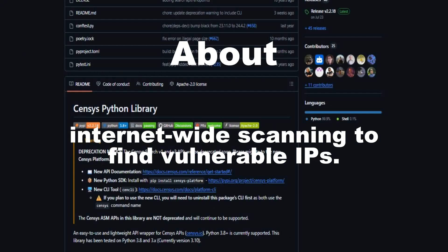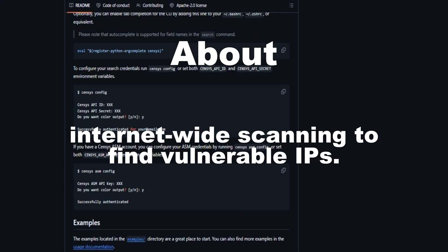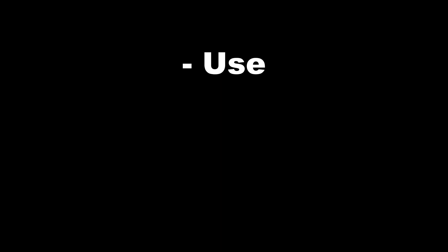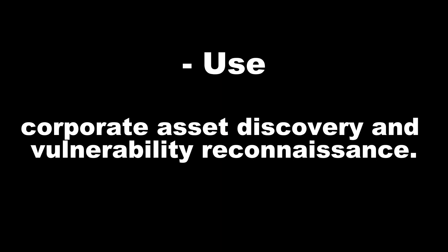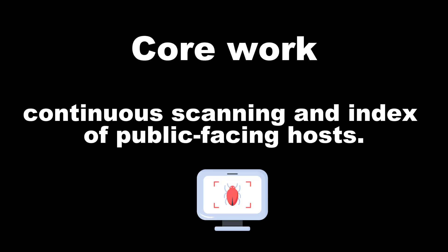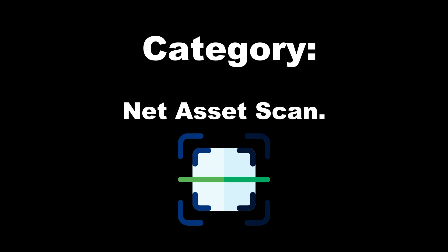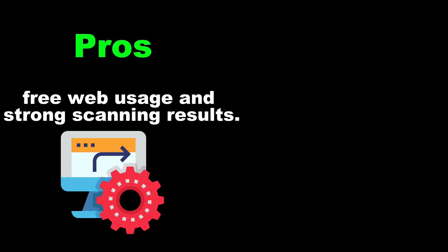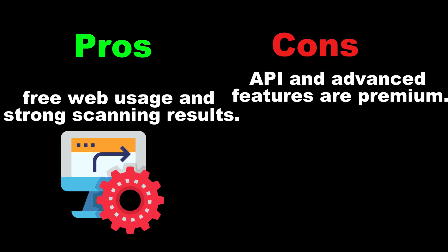Tool 9: Censys. About: internet-wide scanning to find vulnerable IPs. Use: corporate asset discovery and vulnerability reconnaissance. Core work: continuous scanning and index of public-facing hosts. Category: net asset scan. Pros: free web usage and strong scanning results. Cons: API and advanced features are premium.